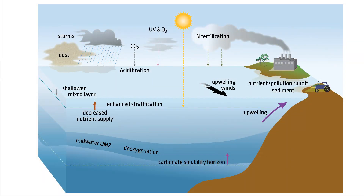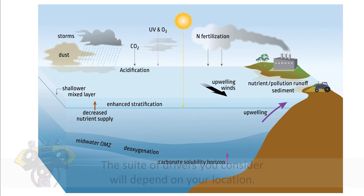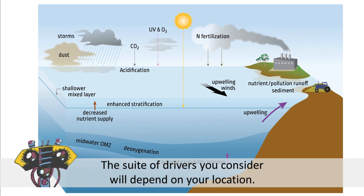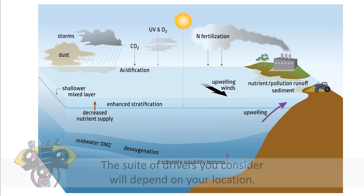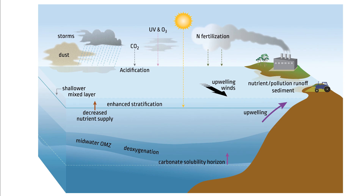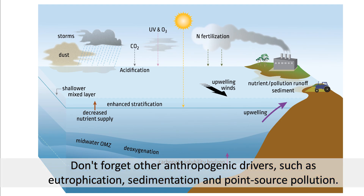Each of these factors will influence what that list of drivers will be. In the cartoon you can see of the ocean, on the left hand side we have the open ocean, on the right hand side we have the near-shore right by the land. Depending on where you are in the ocean, you're going to see a different set or suite of drivers. On the left hand side we have many drivers which may be more influenced by climate change, but on the right hand side we also have other anthropogenic pressures such as eutrophication, sedimentation from increased rainfall and runoff, and point source pollutants.